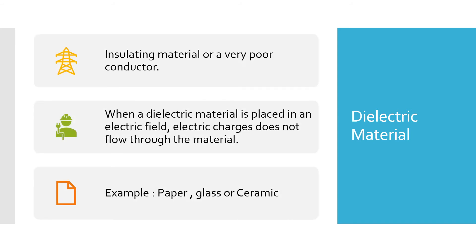Now let's see what is dielectric material. Dielectric material is insulating material or a very poor conductor. When a dielectric material is placed in an electric field, electric charges do not flow through the material. Examples of dielectric material are paper, glass, or ceramic.